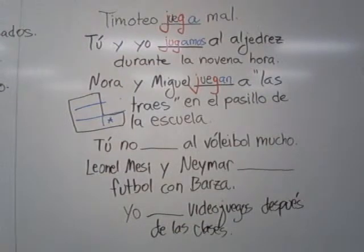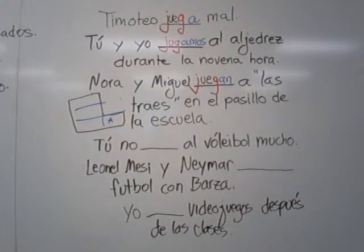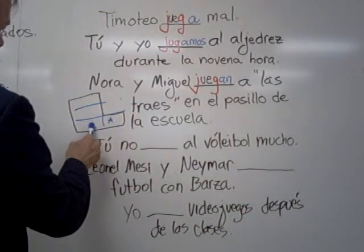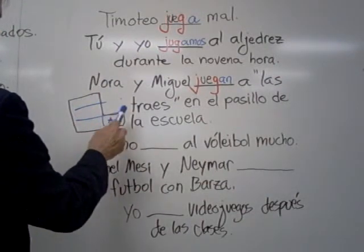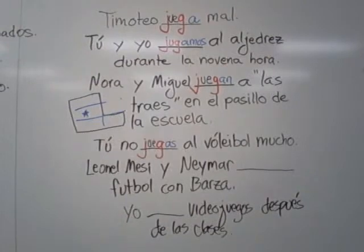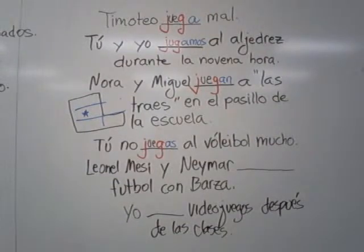Nora y Miguel juegan a las tres en el pasillo de la escuela — Nora and Michael play tag in the hallway of the school. It is ellos — both of them. Miguel is a boy, he has somebody else with him, so we move over to the plural side. It is within the boot, so the stem changes — juegan. Tú no juegas al voleibol mucho — you don't play volleyball much. It's tú, notice where it is in the middle left, inside the boot, so the stem does change.